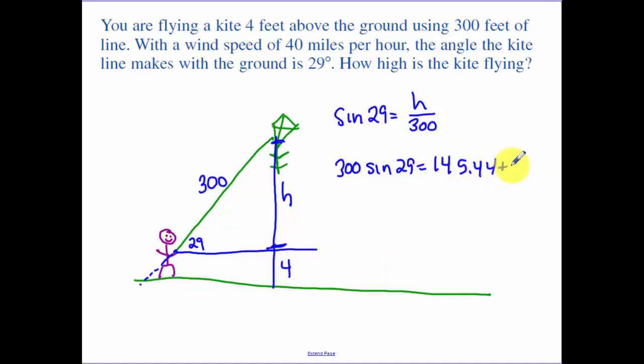Now I add 4 to that. When I add 4 to that I get 149.44 feet. Now notice what part I didn't use. I didn't use the 40 miles per hour. That didn't affect my problem at all. That was extra information they gave me that I didn't need.